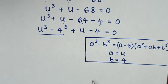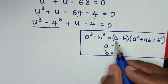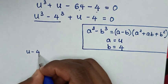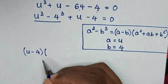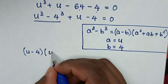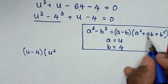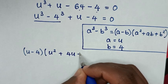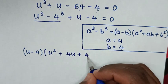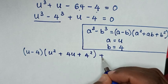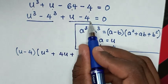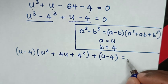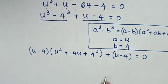Then in the next step, from this part of our equation, it will be a minus b — which is u minus 4 — bracket, times a squared which is u squared, then plus ab which is u times 4 so plus 4u, plus b squared which is 4 squared. Bracket, plus this remaining part u minus 4, so plus u minus 4 bracket, is equal to 0.